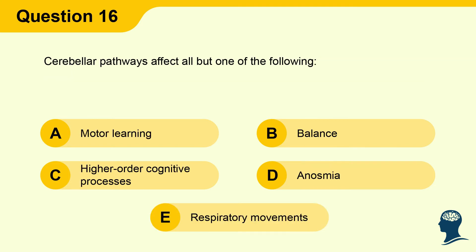Question 16: Cerebellar pathways affect all but one of the following: A) Motor learning, B) Balance, C) High-order cognitive processes, D) Anosmia, E) Respiratory movements.